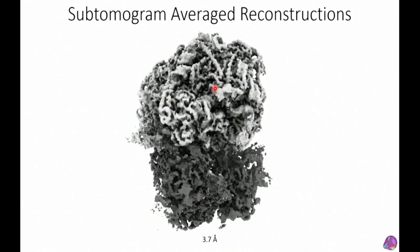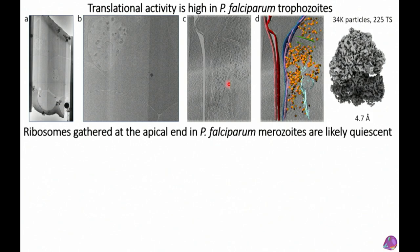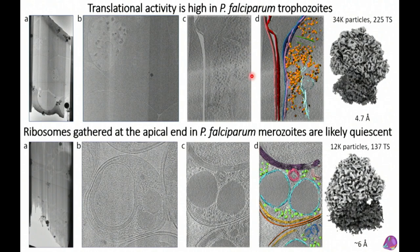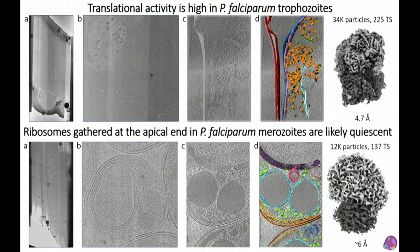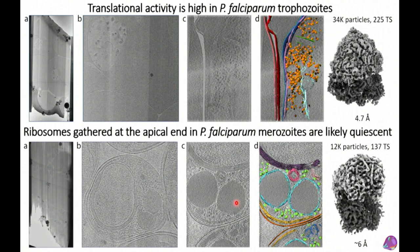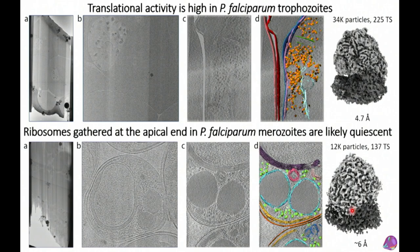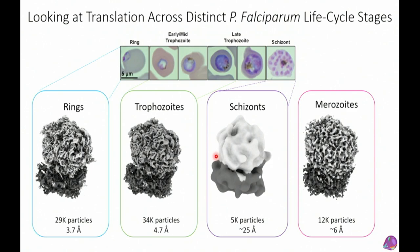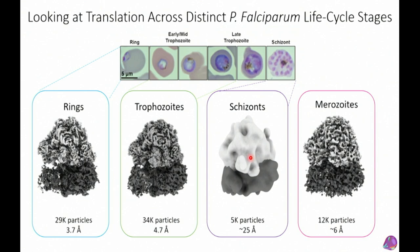Once we did this, we went across the life cycle stages — trophozoites and merozoites. Merozoites are more challenging because they're tiny and contain far fewer ribosomes per cell, requiring many more of them. Here you can see beautiful segmentation of a merozoite — the rhoptries are my favorite, they look really cool. Schizonts are the hardest; we haven't developed the method quite as well there yet.